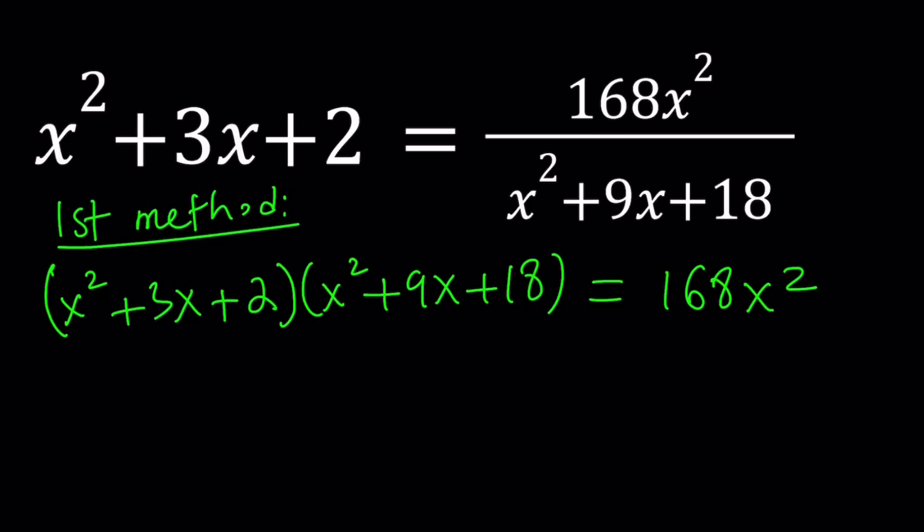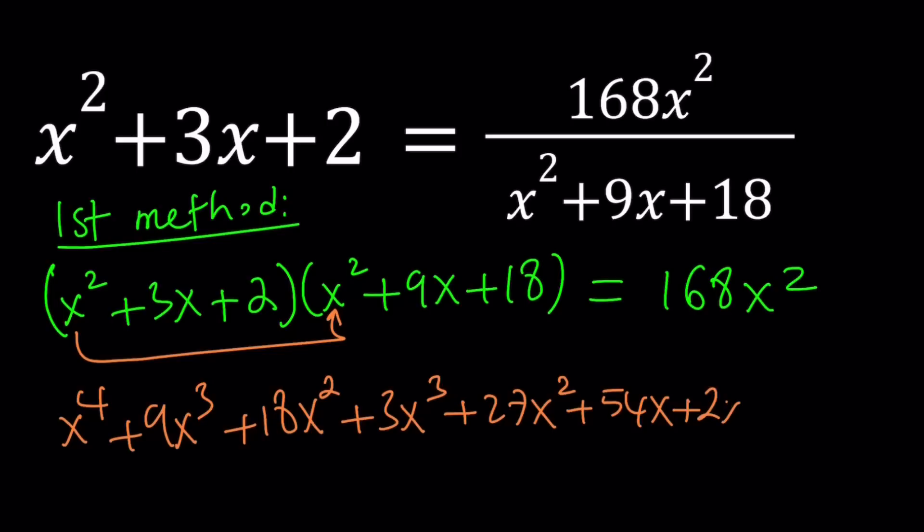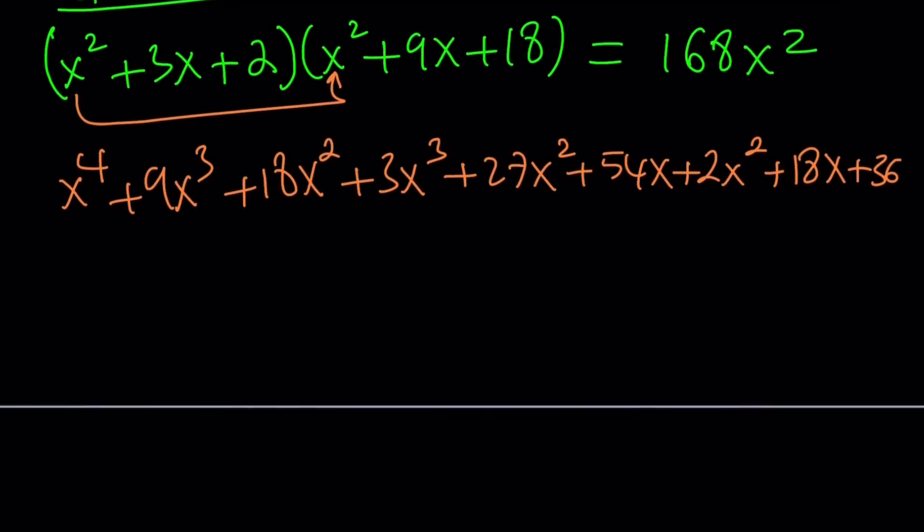So if you go ahead and distribute the whole thing, you can multiply these. You're going to get x to the fourth, then 9x cubed, then 18x squared, then 3x cubed plus 27x squared plus 54x plus 2x squared plus 18x plus 36. You're going to get nine terms. Let's combine like terms. We get x to the fourth, then 12x cubed. You have x squared in three places: 18 plus 27 is 45, 45 plus 2 is 47x squared.